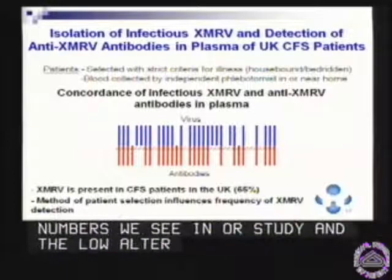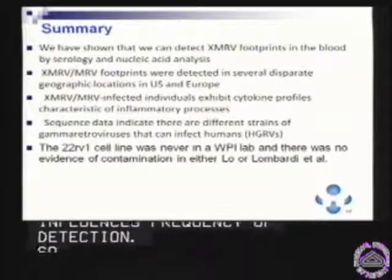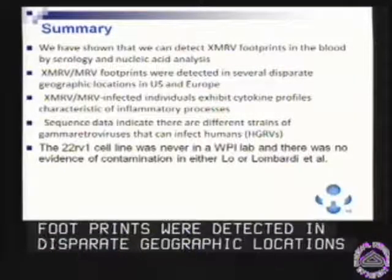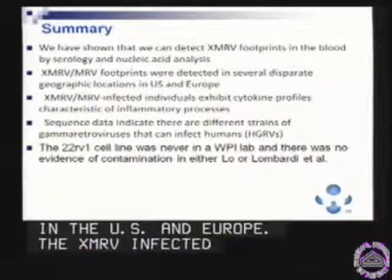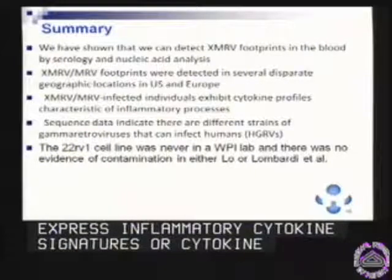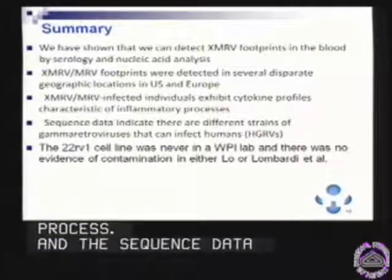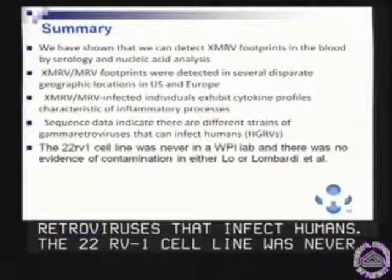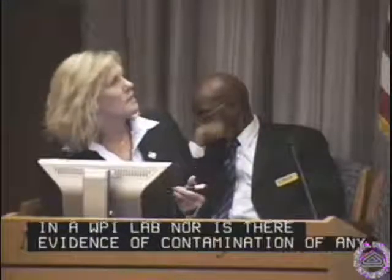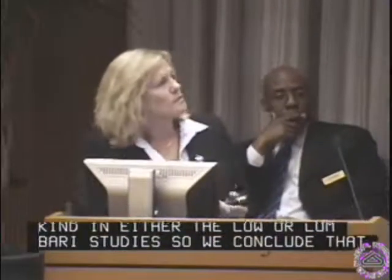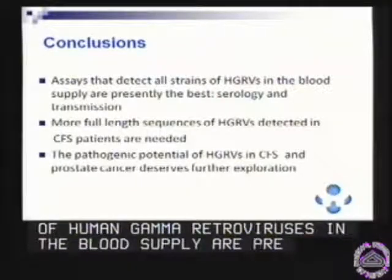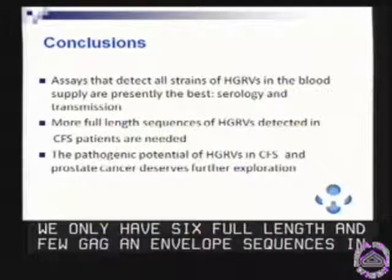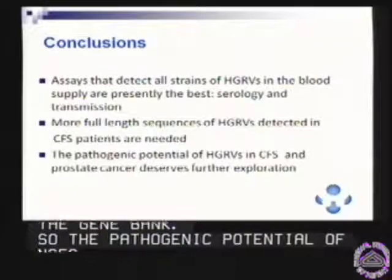The method of patient selection very much influences the frequency of detection. In summary, we've shown we can detect XMRV footprints in the blood by serology and nucleic acid. The footprints were detected in several disparate geographic locations in the U.S. and Europe. XMRV-infected individuals express inflammatory cytokine signatures characteristic of an inflammatory process, and sequence data indicate there are different strains of gamma retroviruses — human gamma retroviruses — that can infect humans. Importantly, the 22RV1 cell line was never in a WPI lab, nor is there any evidence of contamination in either the Lo or Lombardi studies. More full-length sequencing is definitely needed. The pathogenic potential of HGRVs in CFS and prostate cancer, and in fact other diseases, deserves further exploration.